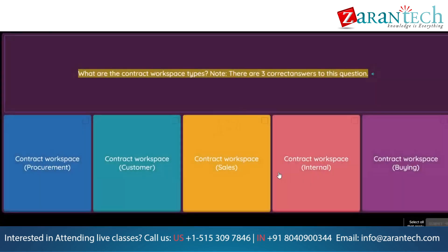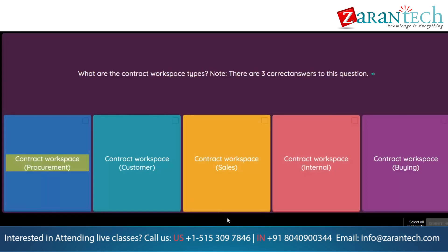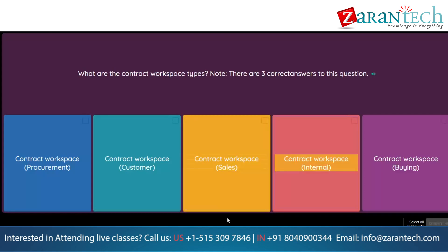Question: What are the contract workspace types? Note: there are three correct answers. Option 1: Contract Workspace, Procurement. Option 2: Contract Workspace, Customer. Option 3: Contract Workspace, Sales. Option 4: Contract Workspace, Internal. Option 5: Contract Workspace, Buying.